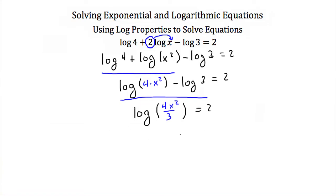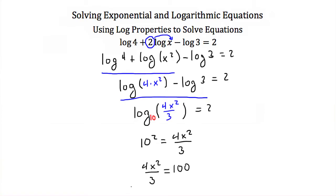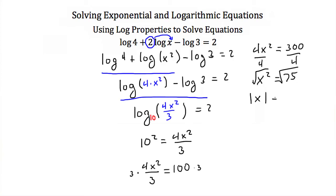Now that I've got this into one logarithm, I can rewrite it as an exponential equation. This is the common log, base 10, so this becomes 10 squared equals 4x squared over 3. Since 10 squared is 100, we have 4x squared over 3 equals 100. Multiplying both sides by 3 gives 4x squared equals 300. Dividing by 4 gives x squared equals 75. Taking the square root of both sides, the absolute value of x equals the square root of 75.